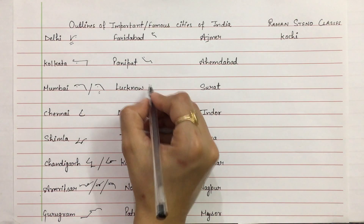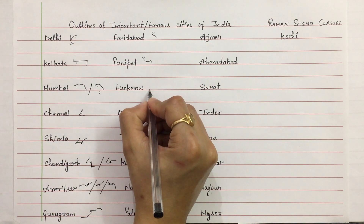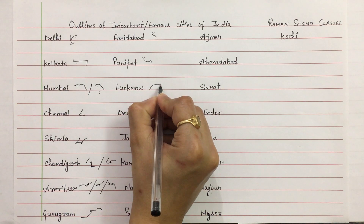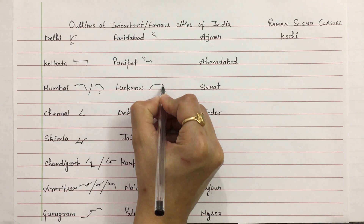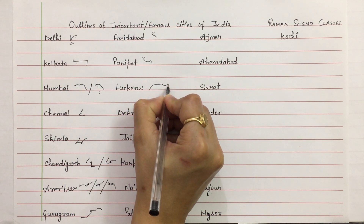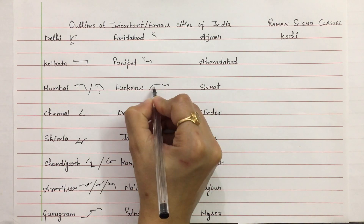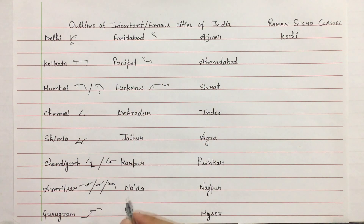Lucknow — on the line. L, K, N, and vowel place. Lucknow.